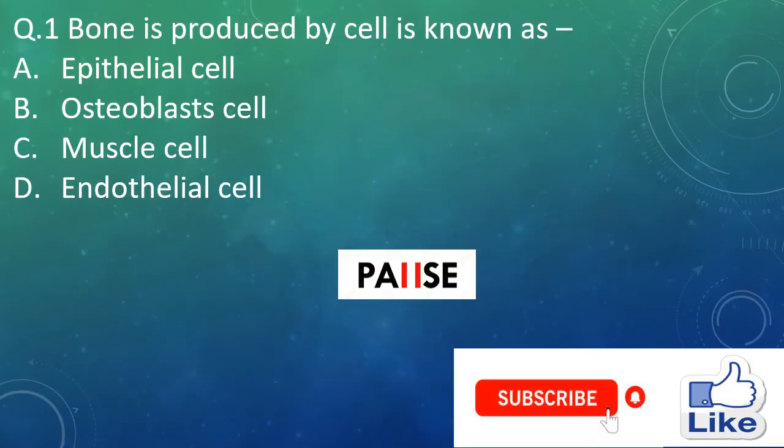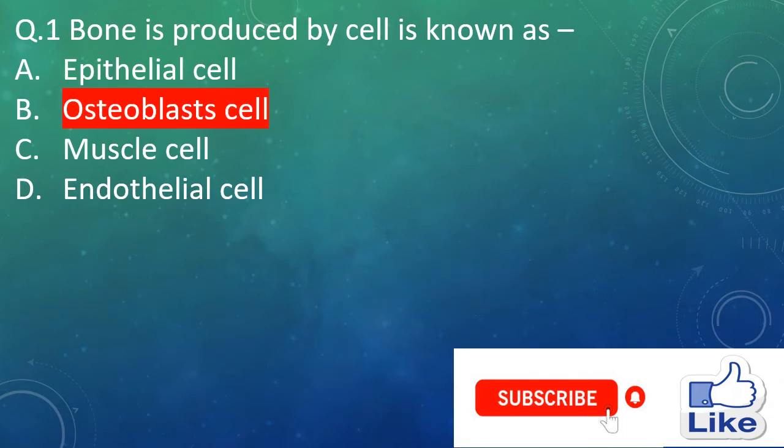Question 1. Bone is produced by a cell known as — option A: epithelial cell, option B: osteoblast cell, option C: muscle cell, and option D: endothelial cell. The right answer is option B, osteoblast cell.